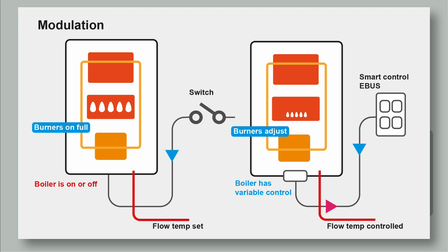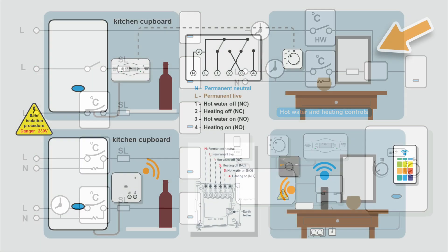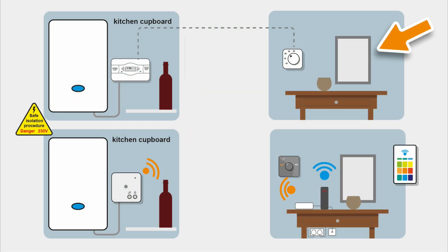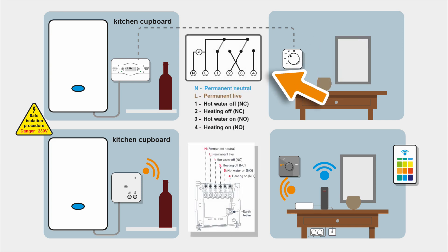No matter how smart the technology gets, all the boiler really wants is a signal that it's got to come on. That can be a 230V signal, an extra-low-voltage signal, or a radio or Wi-Fi signal. In a typical installation the boiler is in the kitchen with the programmer connected by a cable next to it. In a different room - often the hallway - you'll have a thermostat mounted on the wall with a wired connection back to the programmer.